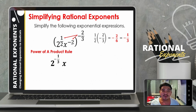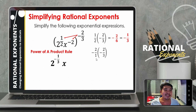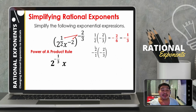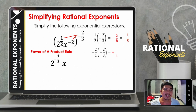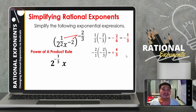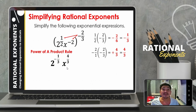Now for x, we multiply negative 2 and negative 2 thirds. Negative 2 can be written as negative 2 over 1. A negative times a negative fraction results in a positive fraction. Multiplying the numerators: 2 times 2 equals 4. Multiplying the denominators: 1 times 3 equals 3. So the result is 4 thirds, meaning the exponent of x is positive 4 thirds.